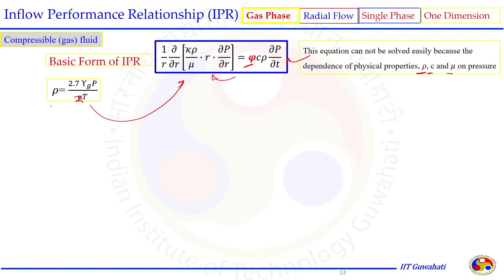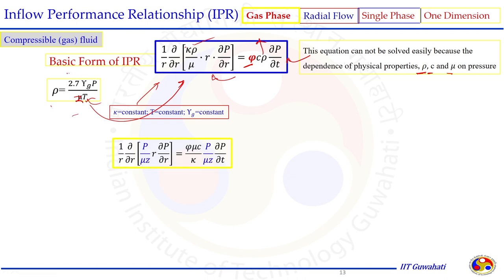For this equation we consider k constant, T constant, and γ_g constant. Replacing ρ in the equation and canceling terms: T cancels out, and 2.7·γ_g being constant comes out of the derivative and cancels from left to right-hand side. The basic form of the IPR for compressible gas then takes a simplified form. However, μ and z remain inside the equation and they are functions of pressure as discussed in natural gas properties.